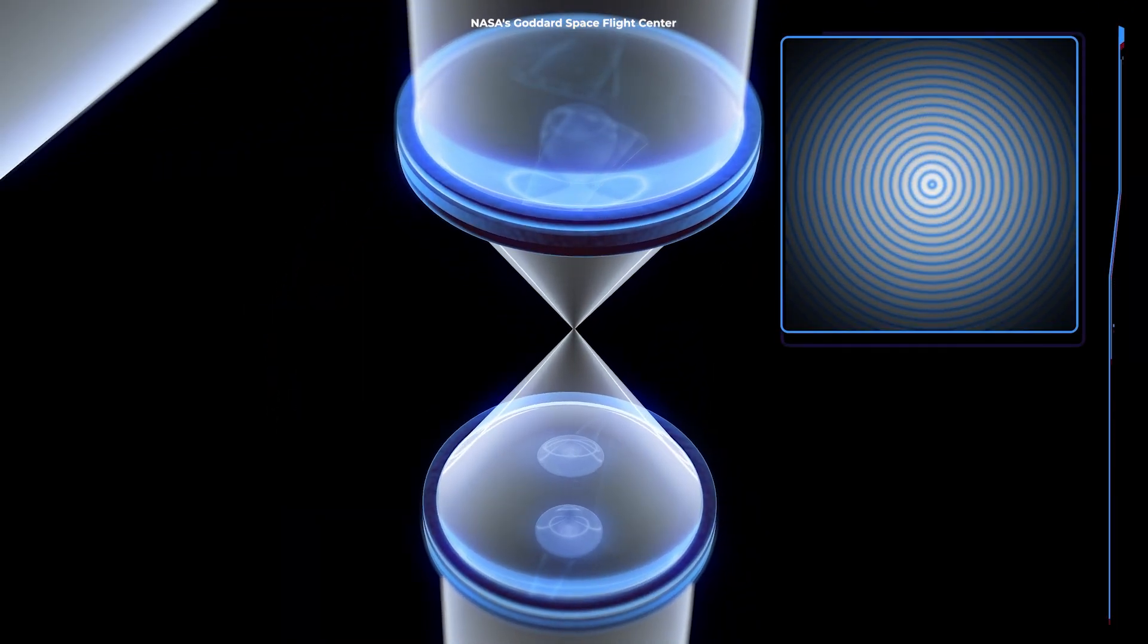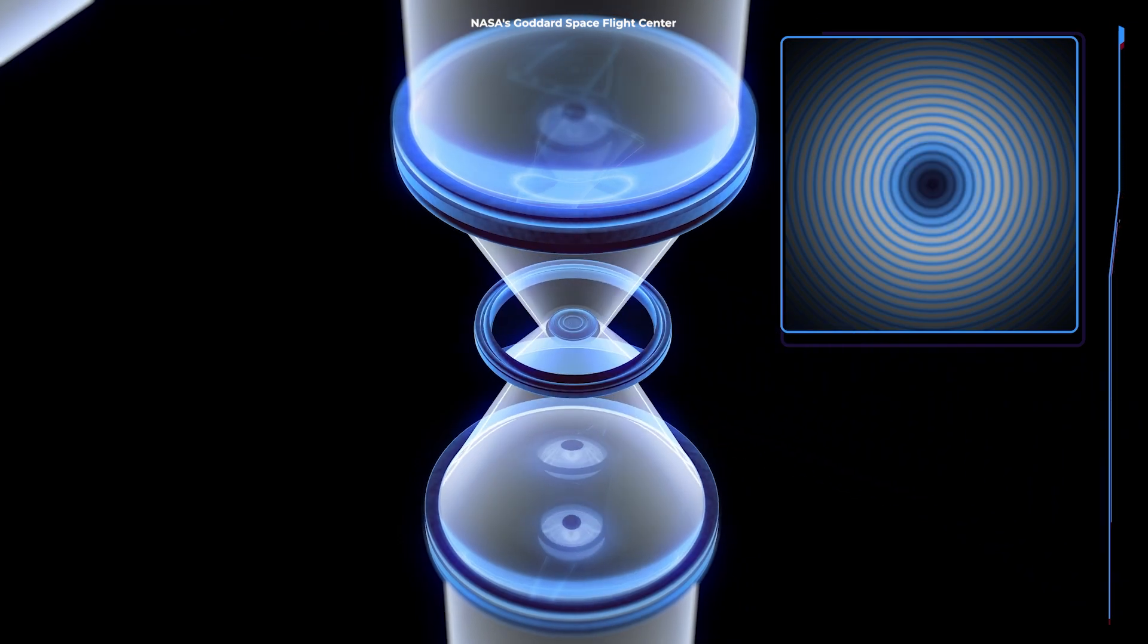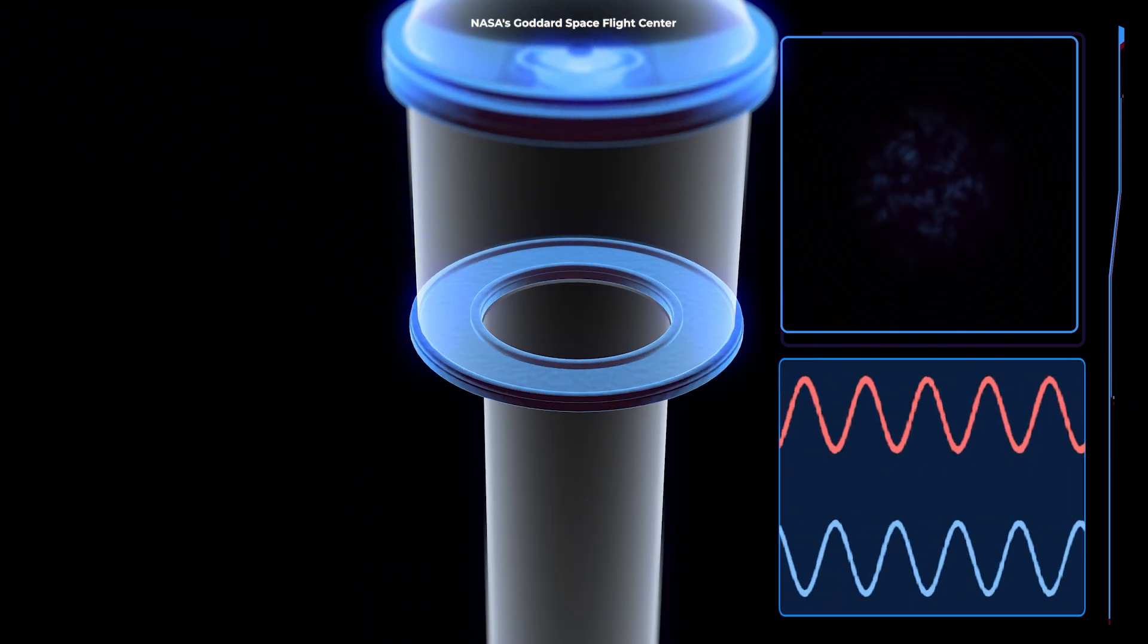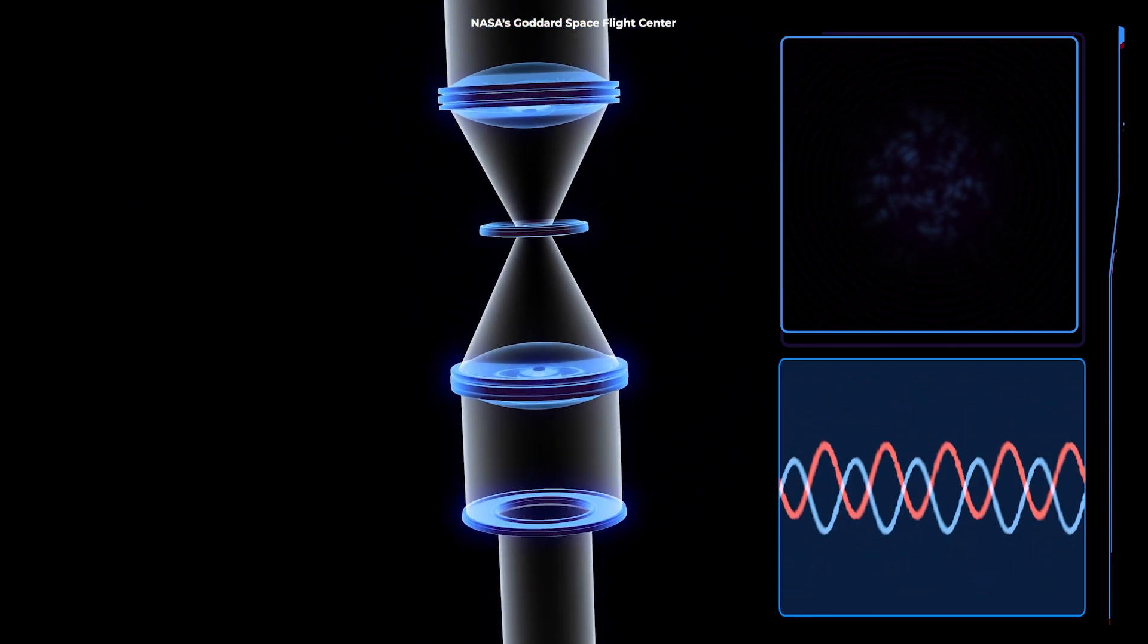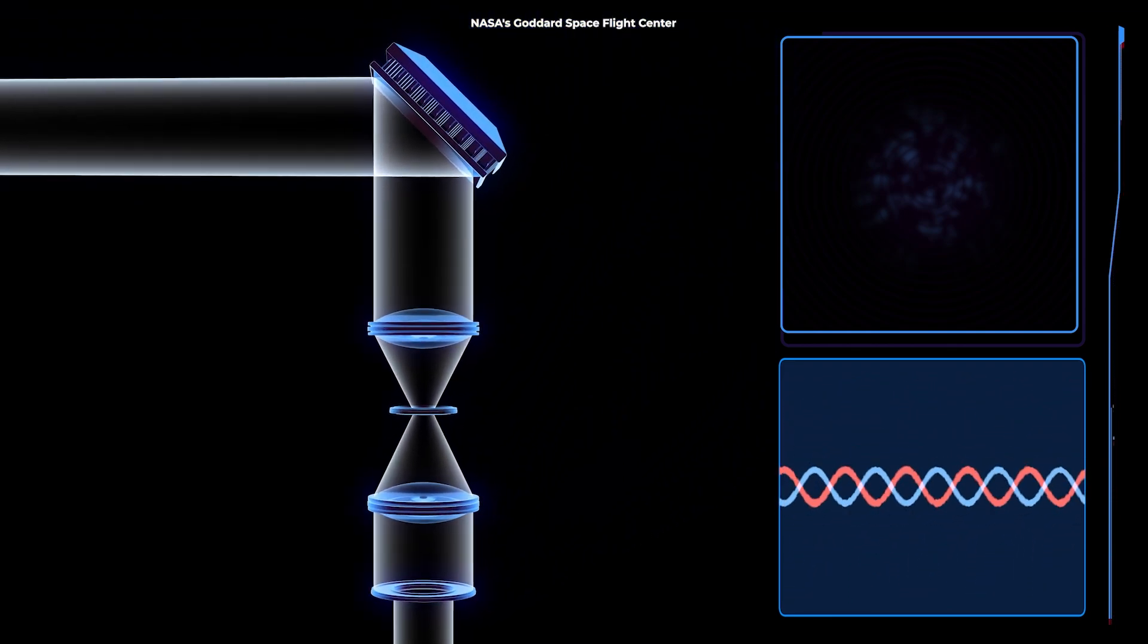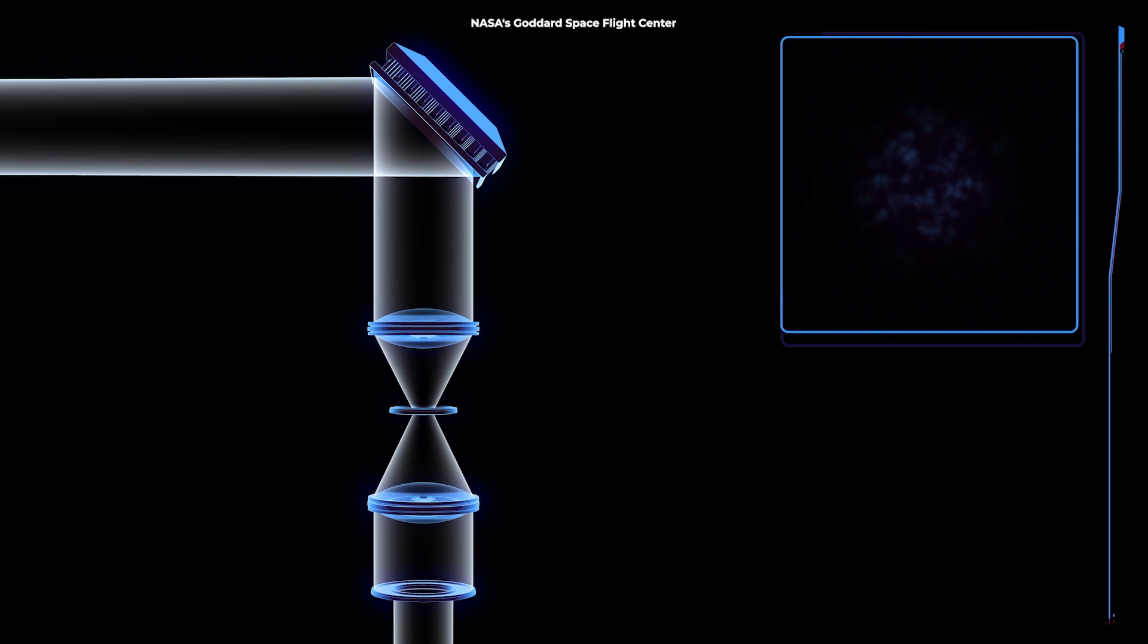Instead of simply blocking starlight with a disk, this coronagraph uses a complex series of mirrors and masks that can separate a planet's faint light from its blazing star. But the revolutionary technology doesn't stop there.